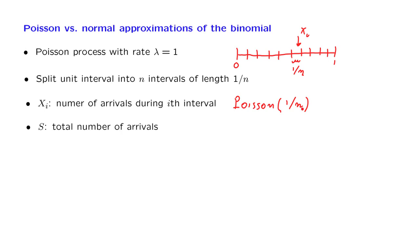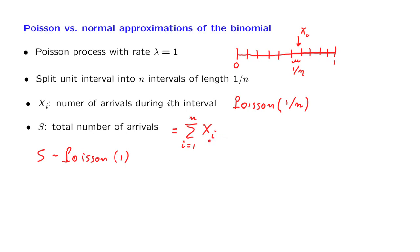Now let us look at the total number of arrivals. The total number of arrivals S is the sum of how many arrivals we had during each one of these intervals. S is a Poisson random variable with parameter equal to 1. What we have here is a sum of random variables that are independent and identically distributed — identically distributed because all intervals have the same length, and independent because in the Poisson process, what happens in different intervals are independent events.